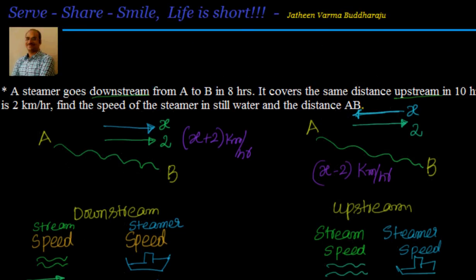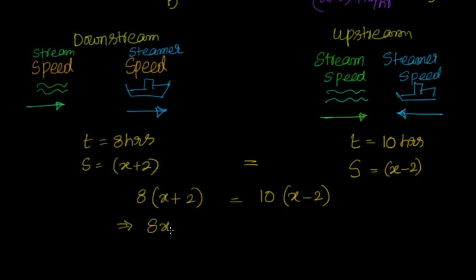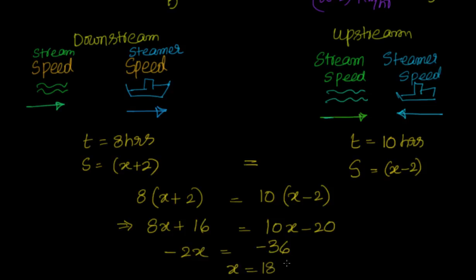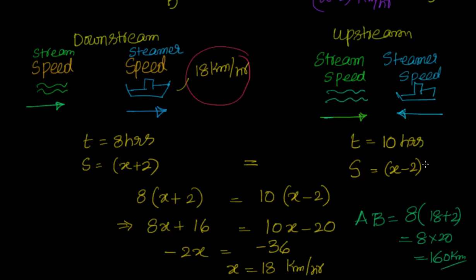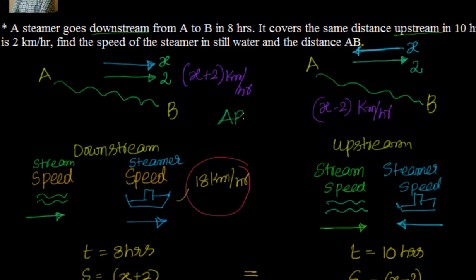Solving the equation: eight x plus sixteen equals ten x minus twenty, giving minus two x equals minus thirty-six, so x equals eighteen kilometers per hour. The speed of the steamer is eighteen kilometers per hour. To find distance AB, we use speed times time: eighteen plus two equals twenty, multiplied by eight equals one hundred sixty kilometers. Cross-checking with upstream: ten times (eighteen minus two) equals ten times sixteen equals one hundred sixty kilometers. So AB equals one hundred sixty kilometers.